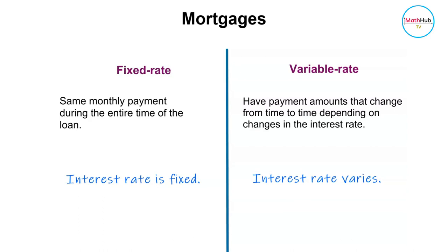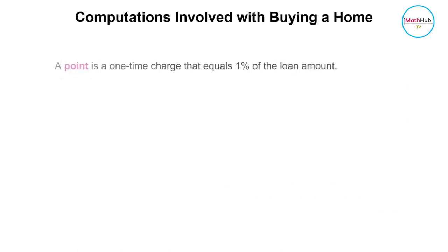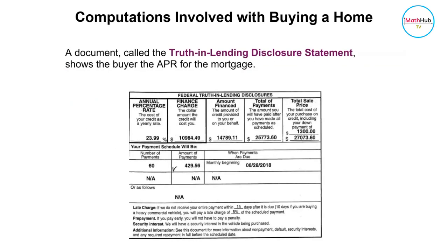Most lending institutions require the buyer to pay one or more points at the time of closing — that is, the time at which the mortgage begins. A point is a one-time charge that equals one percent of the loan amount. For example, two points means that the buyer must pay two percent of the loan amount at closing.